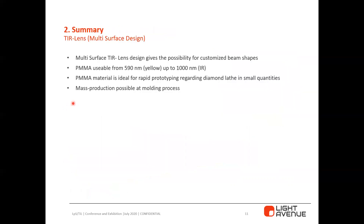The coupling efficiency is at 50%, with losses at material boundaries from the active area of the chip to air, from air into the material, and from the material back into air. The lens shape was re-mastered for diamond-turned manufacturing and for precise assembly on a metal core PCB. In summary, the multi-surface TRR lens design gives us the possibility for custom beam shapes using PMMA material, usable from 590 to 1000 nanometers, and it is ideal for rapid prototyping via diamond turning in small quantities, with mass production also possible via molding.